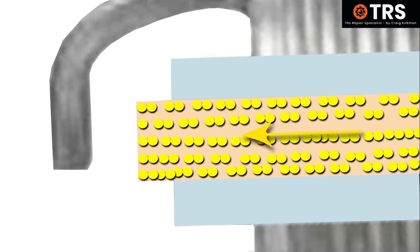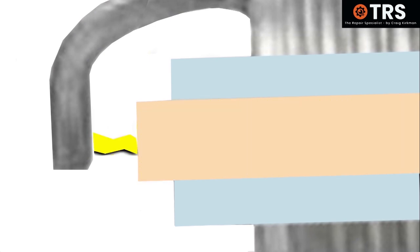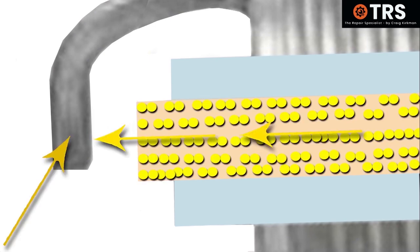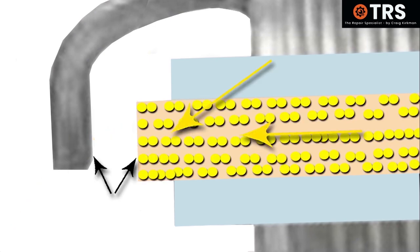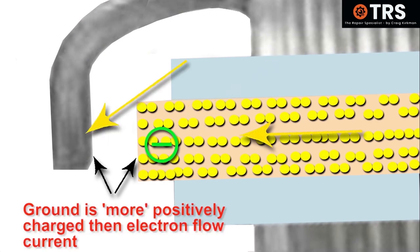the electron flow current finds it difficult to arc across that gap to the ground electrode. That's because it's too far away for those negatively charged electrons in the current to sense the positive charge of the ground from that ground electrode.